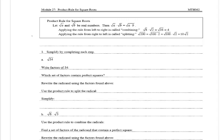If we have the square root of a times the square root of b and set it equal to the square root of a times b, we're combining. And if we have the square root of a times b and set it equal to the square root of a times the square root of b, we call it splitting.